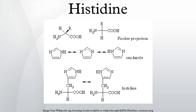In catalytic triads, the basic nitrogen of histidine is used to abstract a proton from serine or cysteine to activate it as a nucleophile. In a histidine proton shuttle, histidine is used to quickly shuttle protons. It can do this by abstracting a proton with its basic nitrogen to make a positively charged intermediate, and then use another molecule — a buffer — to extract the proton from its acidic nitrogen.